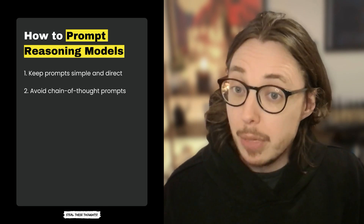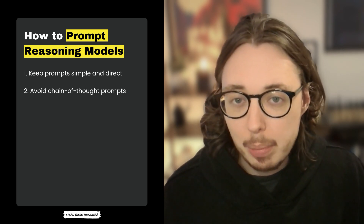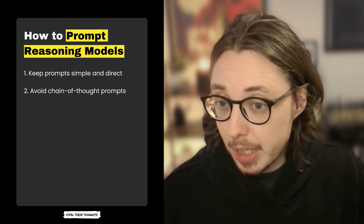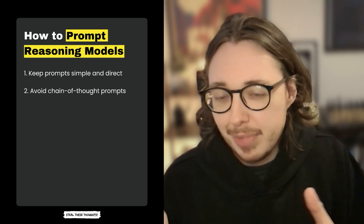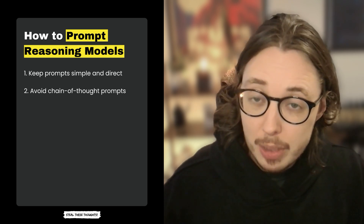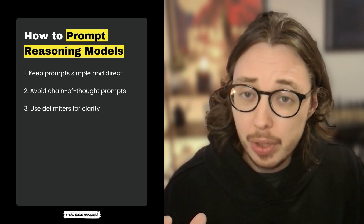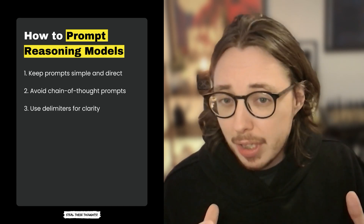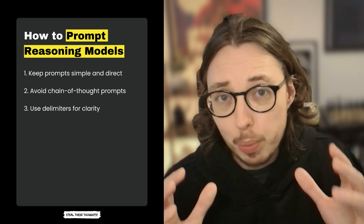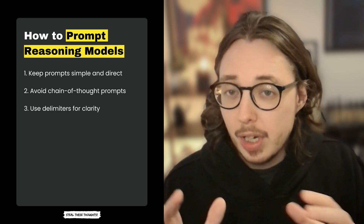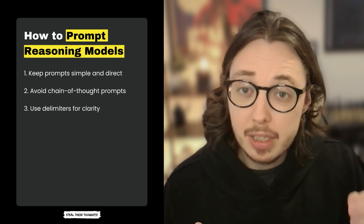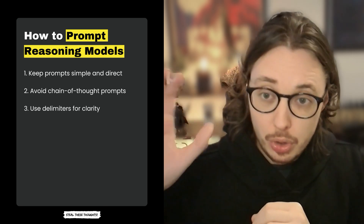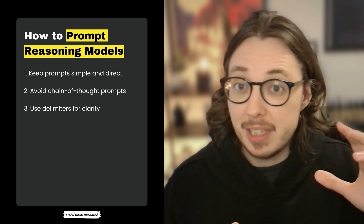Second, avoid chain-of-thought prompts. Previously with GPT models, people would prompt things like 'think step by step' or 'explain your reasoning.' For reasoning models this is unnecessary, because these models already reason internally and giving them those instructions can cause confusion. They will present their reasoning to you with every output. Third, use delimiters for clarity. Delimiters like markdown, XML tags, or section titles help make your prompts clean and separate different parts of your input, helping the model interpret sections correctly — understanding what's context, what's the task, and what are specific notes.